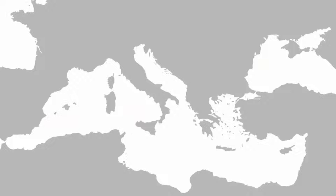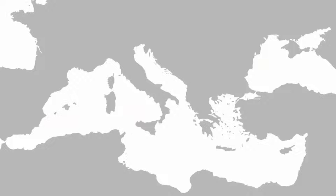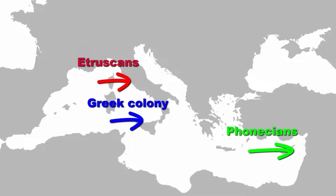The Etruscans derived the alphabet from a Greek colony in Italy. The Greek alphabet was believed to be derived from the Phoenician alphabet, which was derived from Egyptian hieroglyphs. It's kind of like a chain reaction, and these were the ultimate inspiration for all.